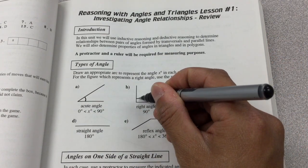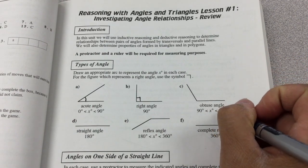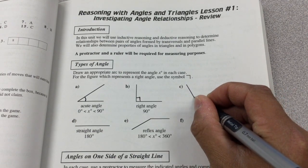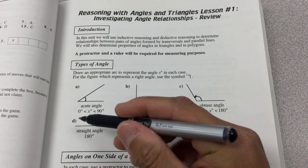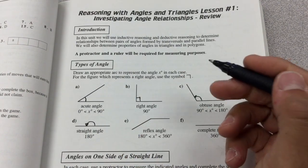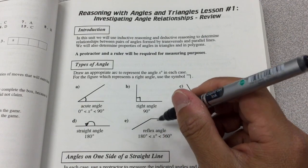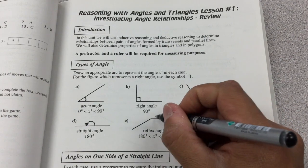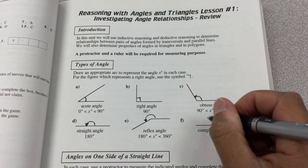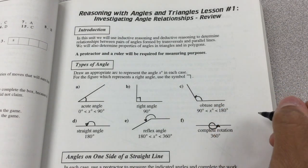This is a 90-degree right angle, where we use the right angle symbol. For an obtuse angle, x is greater than 90 but less than 180 degrees. For a straight angle, that's 180 degrees. For a reflex angle, x is greater than 180 but less than 360 degrees. And for a complete rotation, we show going all the way around and coming back to where we started.